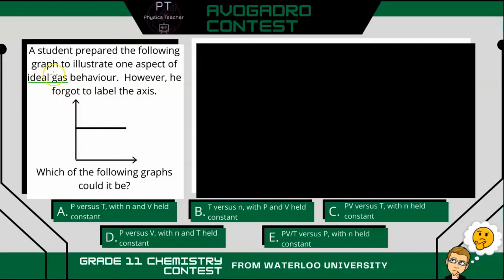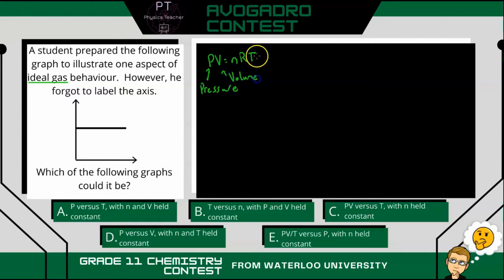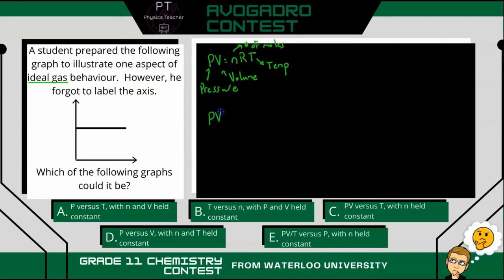All right, so this is looking at ideal gas behavior. Your ideal gas law is PV equals nRT, where P is pressure, V is volume, n is the number of moles, T is temperature, and R is a proportionality constant. Because R is a proportionality constant, we can rewrite this as a proportionality instead of an equation: PV is proportional to nT.